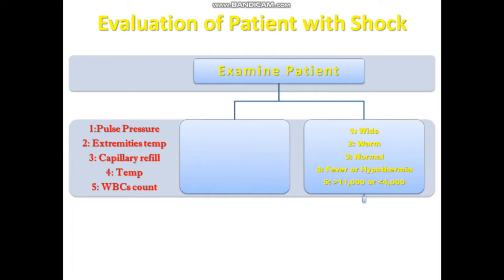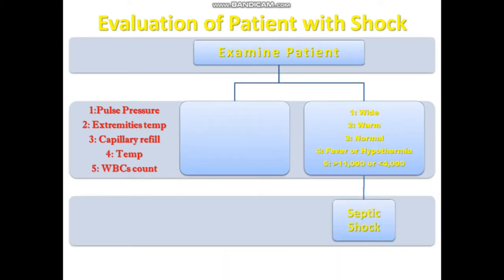If a patient has a wide pulse pressure, warm extremities, normal capillary refill time, and either hyperthermia or hypothermia, with a TLC count either more than 11,000 or less than 4,000, this is septic shock. Septic shock is usually caused by gram-negative sepsis or cytokines released from bacteria, which leads to vasodilation.